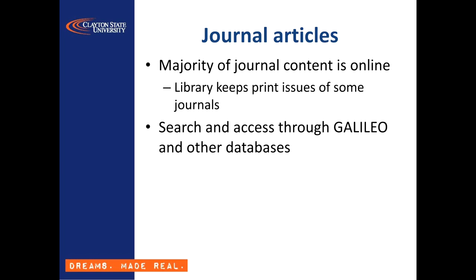Next we have journal articles. The good news here is that almost all journal articles these days can be found online using library databases, so they're accessible from off campus. Journal articles tend to be briefer and more narrowly bounded than books, focusing on a smaller scope, but they're often more timely as the publishing turnaround time is shorter for journals than the book industry.